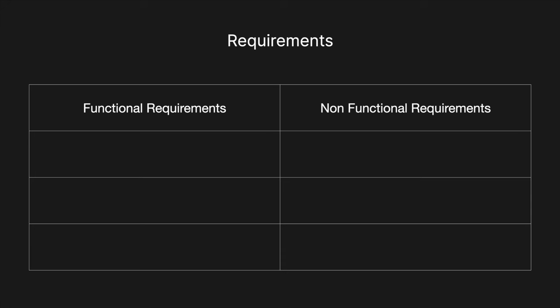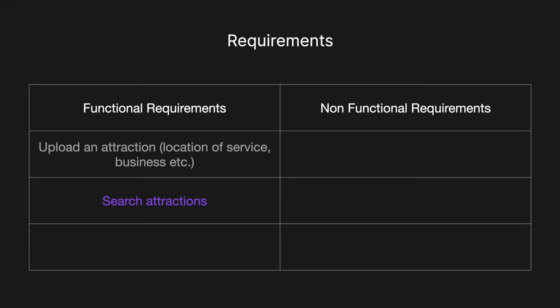Looking at the functional requirements: first, we'll want users to be able to create an attraction — these are locations of services, businesses, etc. We'll also want users to be able to search attractions based on query search terms like the type of restaurant, what type of business it is, and how many ratings it has. We also want users to be able to add reviews to an attraction so other users can see what others think.